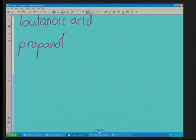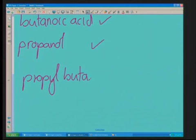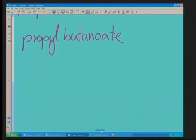And what I want to show you is we've identified the two: the butanoic acid and the propanol. And what we're going to do is get the name. So always start with the alcohol, so it's propyl butanoate. Okay. Let's draw the structure very quickly, and hopefully we can get it in.